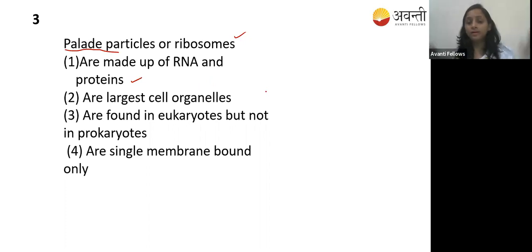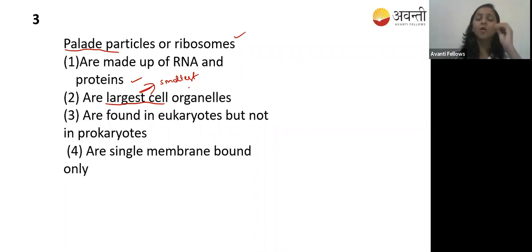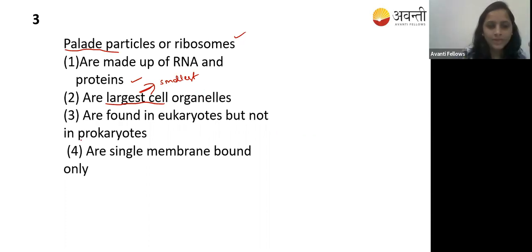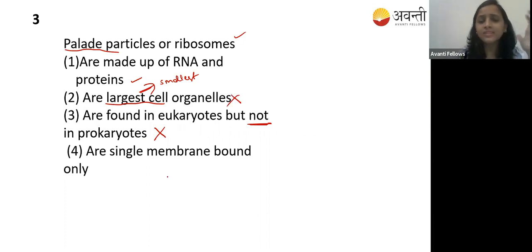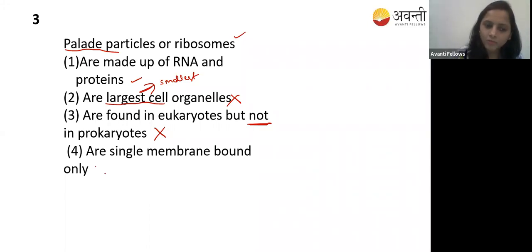Option two - are the largest cell organelle - no, it is the smallest cell organelle. Option three - found in eukaryotes but not prokaryotes - no, ribosome is the only organelle present in both eukaryotes and prokaryotes. Option four - single membrane bound only - no. Ribosome is membrane-lacking; it does not have any membrane. So option four is also wrong.